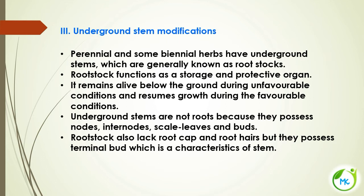The next kind of modification is underground stem modification. Perennial and some biennial herbs have underground stems referred to as root stalks. These root stalks function as storage and protective organs, remaining alive below the ground during unfavorable conditions and resuming growth after favorable conditions return. Underground stems are not roots because they possess nodes, internodes, scale leaves, and buds. Root stalks also lack root cap and root hair. They possess a terminal bud, which differentiates them from roots — a characteristic feature of the stem.